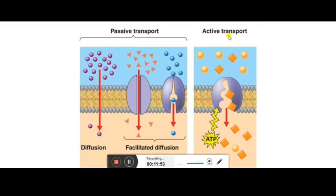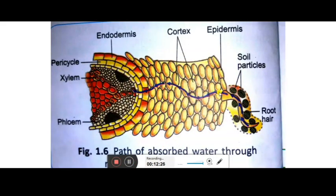Active transport uses energy in the form of ATP — adenosine triphosphate. Active transport needs energy because molecules have to move from lower concentration to higher concentration. Minerals move with the help of active transport inside the plant. So diffusion and osmosis are passive transport, whereas active transport is the third type. Water moves from cell to cell through osmosis — only solvent molecules move through the semi-permeable membrane.